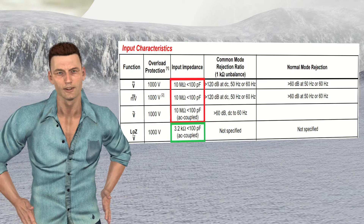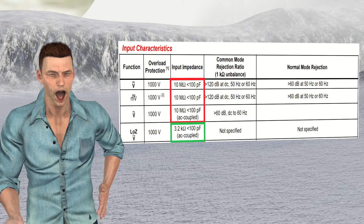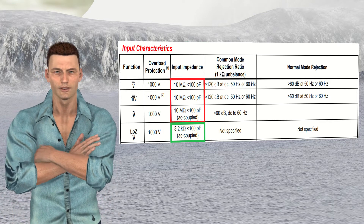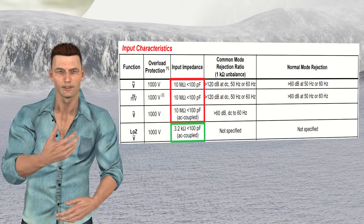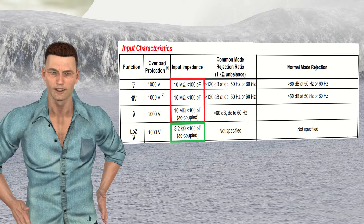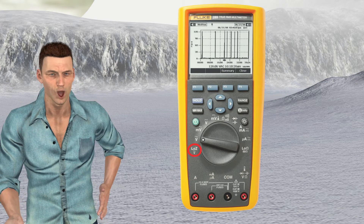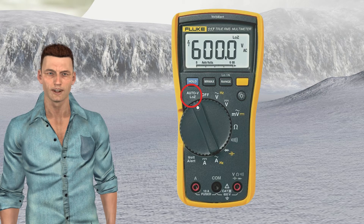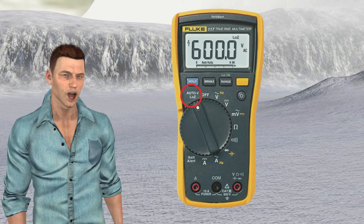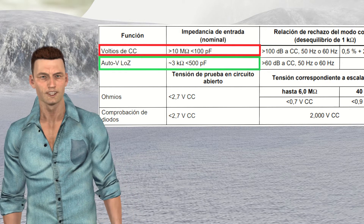When we look at the technical specifications of the Fluke 289 multimeter, we see that two different impedances appear. On the one hand, the typical impedance of 10 mega ohms appears for the measurement of direct and alternating voltages, and on the other hand, an impedance of 3.2 kilo ohms appears for the measurement of alternating voltage associated with a function called LOZ. This name LOZ comes from low zeta, that is, low impedance. The Fluke 289's rotary knob allows selection of this LOZ function, and the Fluke 114, 116 and 117 multimeters also have that LOZ function with an input impedance of about 3 kilo ohms in that mode.